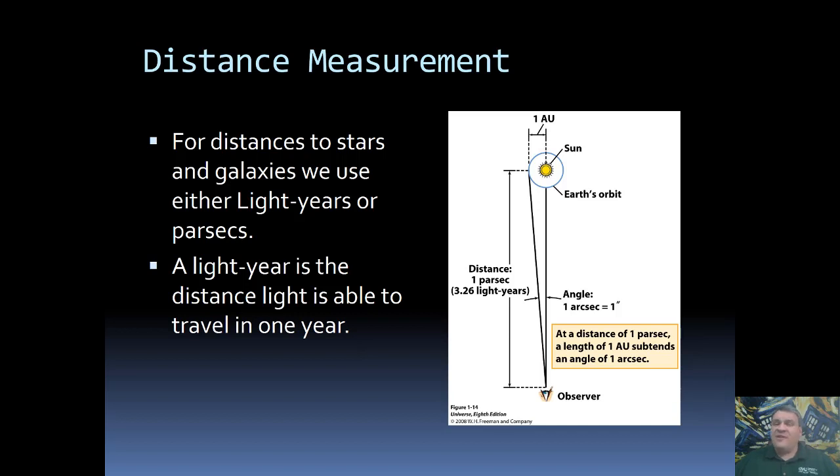You're probably already familiar with a light year. The definition for a light year is the distance that light can travel in a single year. You time light for a year, figure out how far it's gone, that is one light year.